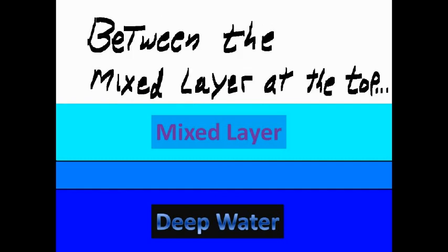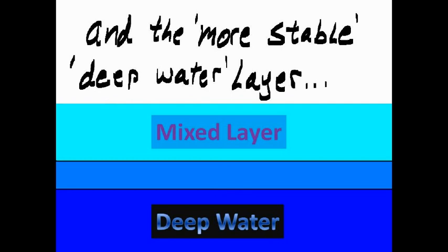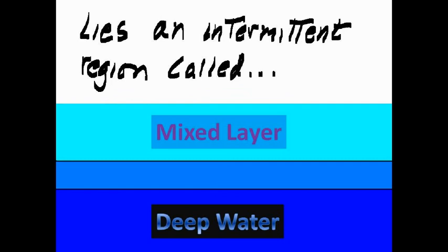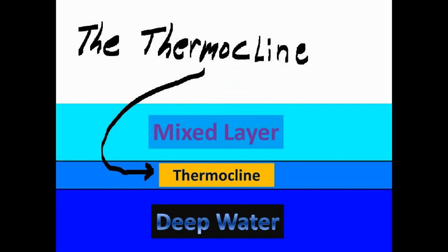Between the mixed layer at the top and the more stable deep water layer, lies an intermittent region called the thermocline.